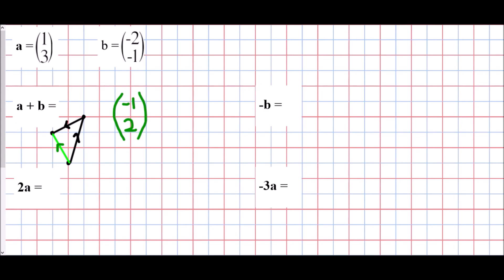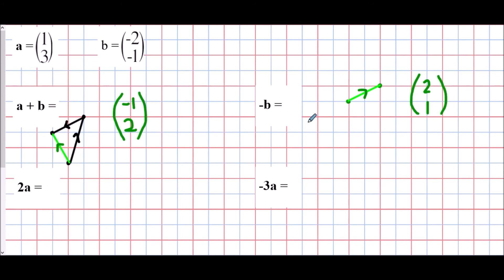Next we look at negative b. First I'll draw vector b: negative two, negative one — so it looks like that. But negative always means the opposite — we are reversing the direction. The original journey for b went from top to bottom, but because this is a negative version, we point in the other direction. As a column vector, that means two places to the right (positive) and one place up (positive). Negative two has become positive two, and negative one has become positive one.